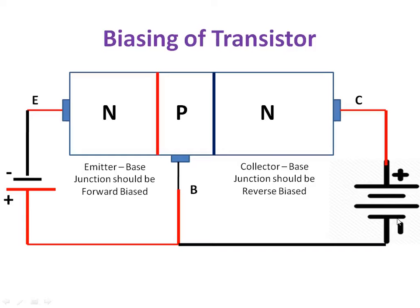Let us discuss the importance of biasing of a transistor. The emitter-base junction is forward biased because the n terminal is connected to negative and the p terminal is connected to positive — this red color junction is forward biased. The blue color junction has n connected to positive and p connected to negative, so the collector-base junction is reverse biased.